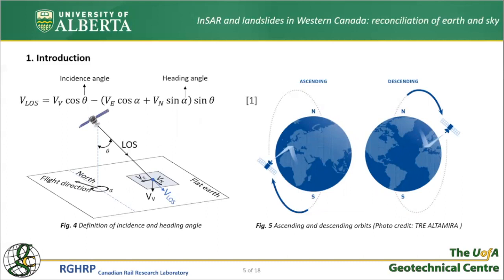Displacement values that InSAR yields is only part of the actual value — InSAR gives the magnitude of displacement vector projected on the satellite's line of sight. The relationship between line-of-sight displacement rate and the actual horizontal and vertical displacement rates involves geometrical features of the sensor: incidence angle theta and heading angle alpha. Theta is the angle the vertical axis makes with line of sight, and alpha is the angle the satellite's flight direction makes with north. The satellite sweeps the globe in two different geometries, ascending and descending, and having these two geometries allows us to back-calculate the components of movement, at the cost of ignoring the south-north component.